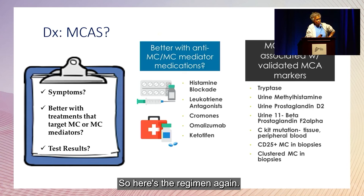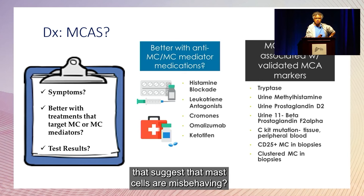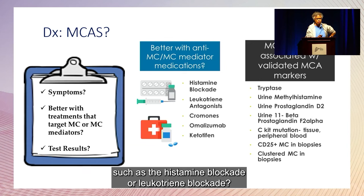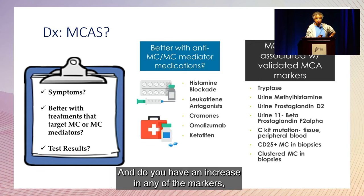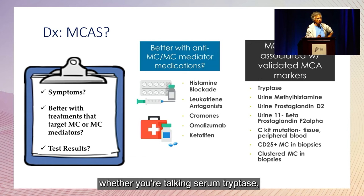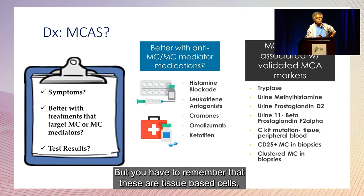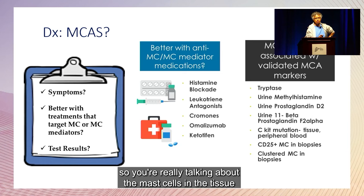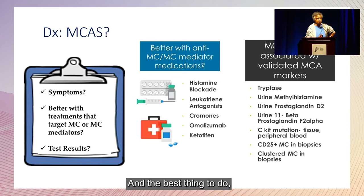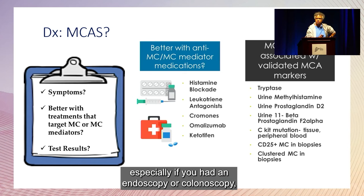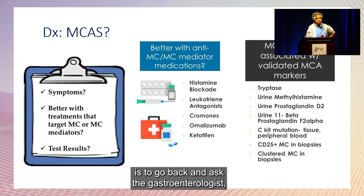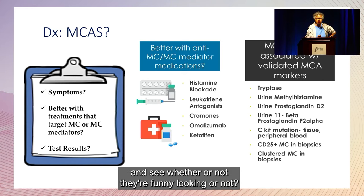The diagnostic regimen: do you have signs or symptoms that suggest mast cells are misbehaving? Do you get better with medications that target it, such as histamine blockade or leukotriene blockade? And do you have an increase in any of the markers — serum tryptase, or urinary markers such as methyl histamine or prostaglandins? Remember, these are tissue-based cells. The best thing to do, especially if you've had an endoscopy or colonoscopy, is to go back and ask the gastroenterologist to highlight the cells for presence of mast cells and see whether they're abnormal.